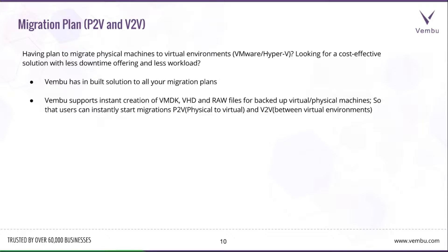There is a significant need for migration between physical to virtual, virtual to physical, or between hybrid virtual environments like VMware to Hyper-V or vice versa. Wambu has a built-in solution for all your migration plans, supporting instant creation of VHD, VMDK, and raw file formats from backed-up physical or virtual machines. Users can instantly start performing migrations — physical to virtual, virtual to physical, or between VMware and Hyper-V — without manual migration steps.